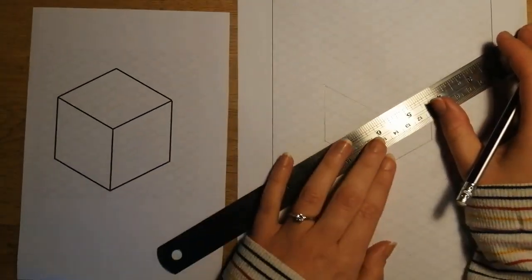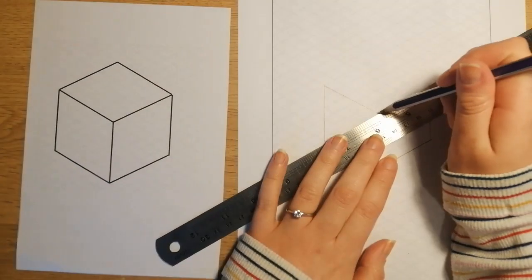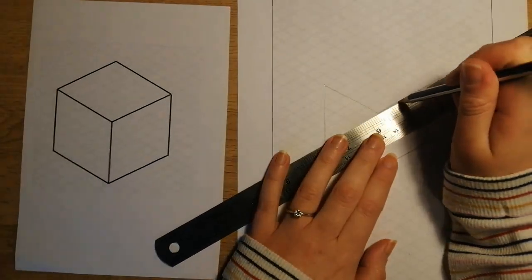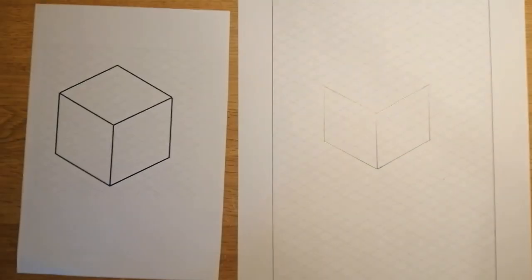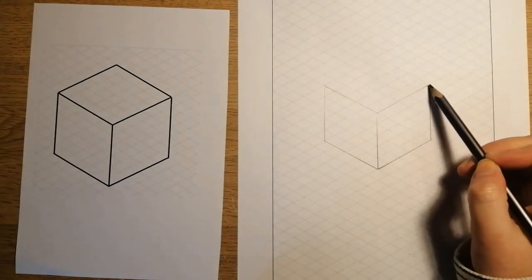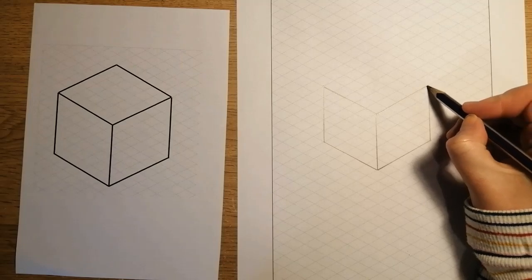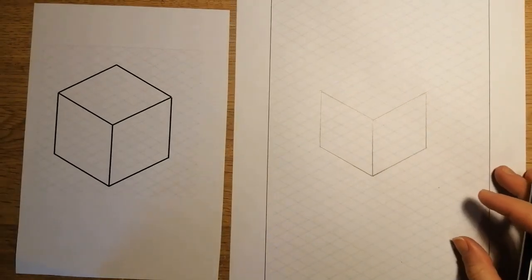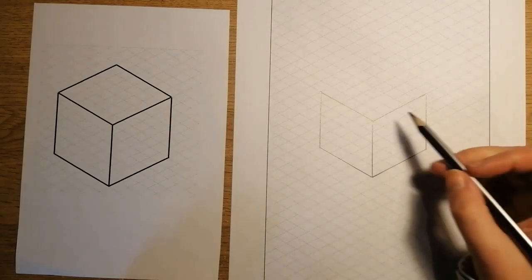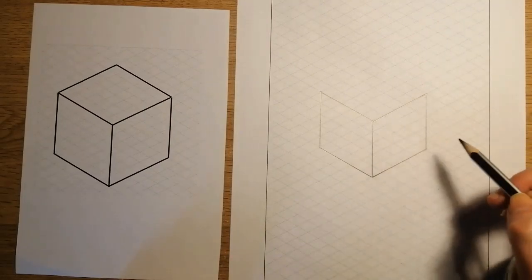And the same on the other side. Again, you should just double check that you've got one, two, three, four, five, or however big you're doing your cubes. If you're doing it seven diamonds tall, that's absolutely fine. You can then make all of your sides seven diamonds wide or tall.